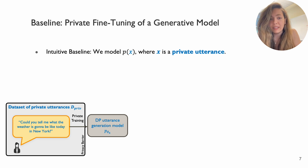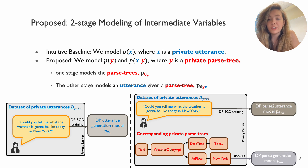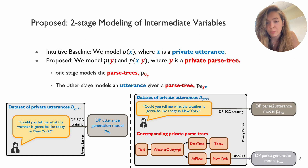The intuitive baseline is to generate utterances similar to private utterances by modeling P(X), where X is private utterances — training a generative model in an autoregressive way using differential privacy. However, to get distributionally closer to the private utterances, we propose modeling the parse trees as intermediate variables. We model P(X|Y), where Y is an approximate private parse tree obtained using an imperfect parser. So we have one stage that models the parse trees P(Y), and another stage that models the utterances given the parse trees. Both stage models are trained separately with differential privacy. To produce a synthesized dataset, we first sample a parse tree from the parse generation model, then conditionally sample an utterance from the parse-to-utterance model.